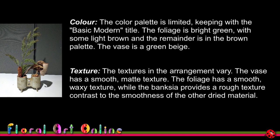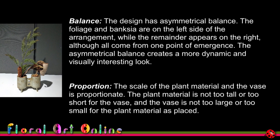Looking at color and texture: the color palette is limited, keeping with the Basic Modern title. The foliage is bright green with some light brown, and the remainder is in the brown palette. The vase is a green-beige color. The textures vary — the vase has a smooth matte texture, the foliage has a smooth waxy texture, while the banksia provides a rough texture contrast to the smoothness of the other dried material. For balance and proportion: the design has asymmetrical balance, with the foliage and banksia on the left and the remainder on the right, although all come from one point of emergence, so it's a radial design. The scale of the plant material and the vase is proportionate.